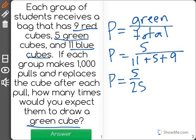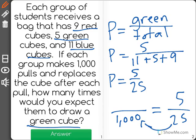Now, what it's saying is if you make 1,000 pulls, how many of them are likely to be green? Well, let's find an equal ratio. To go from 25 to 1,000, I would have to multiply by 40, and I'll need to do the same on the top to keep my proportions equal.